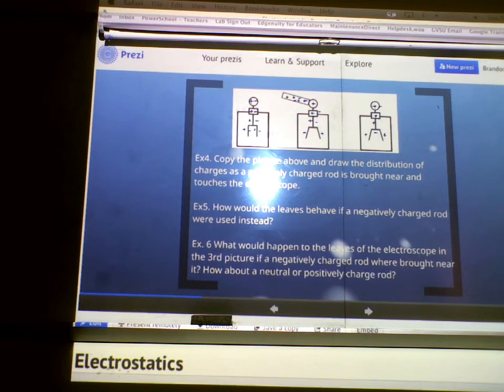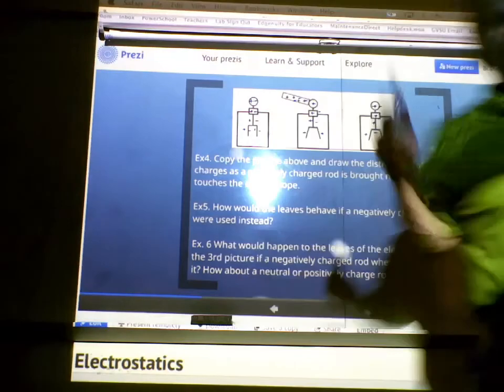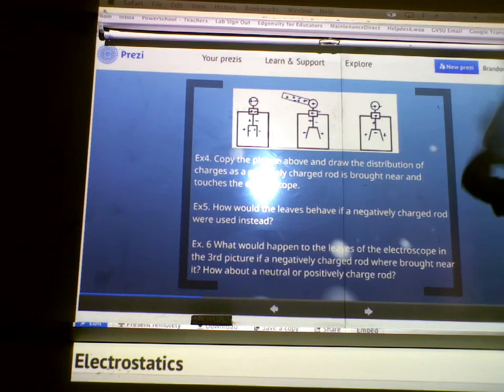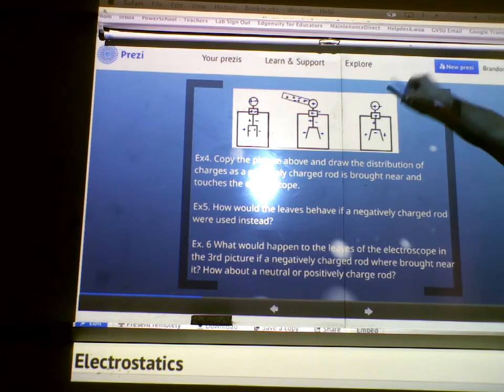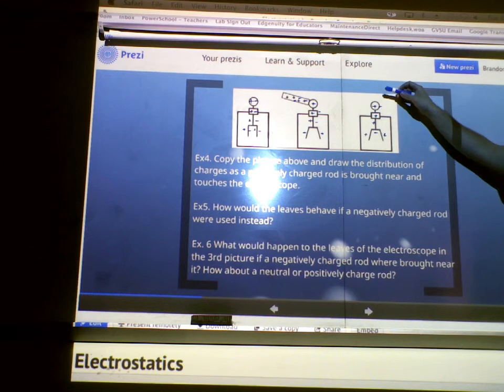Okay, last one. What would happen to the leaves of the electroscope in the third picture? So, just in the far right picture, all right, if a negatively charged rod were brought near it, how about a neutral or positive charged rod? Let's think about a negatively charged rod. If I bring a negatively charged rod near this electroscope, what's going to happen? It will gain electrons. I'm not touching it. Just bring it near. It's like this. Which electrons? The ones in the rod or the ones in the electroscope? The ones in the electroscope. Good.